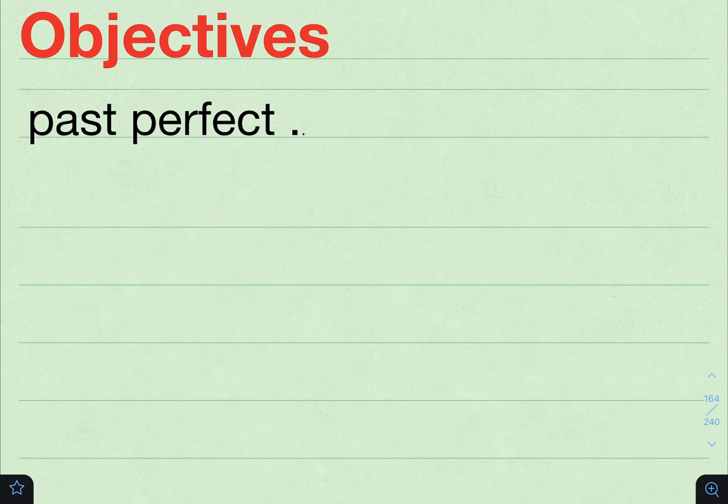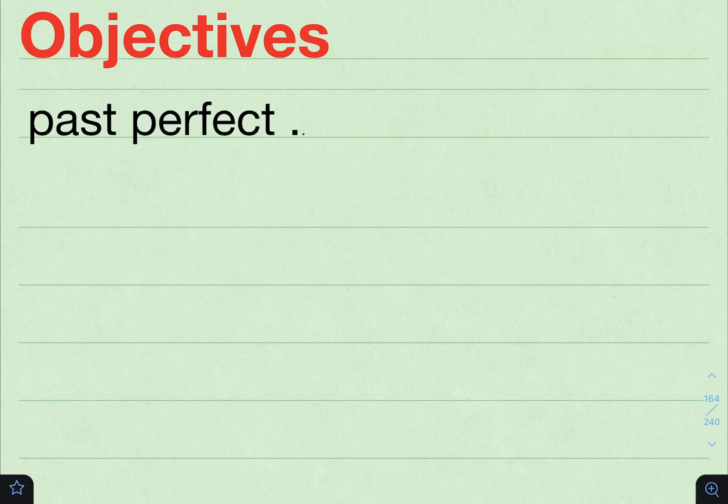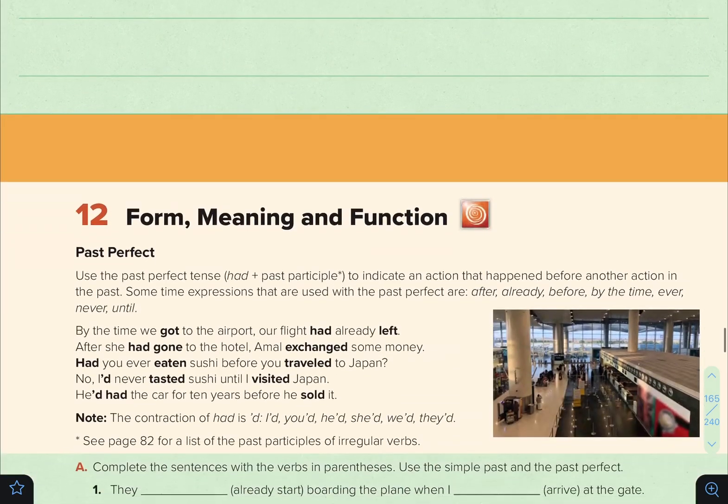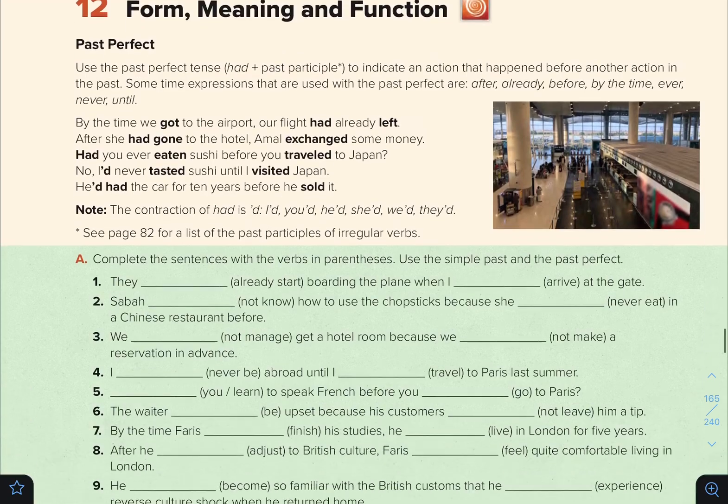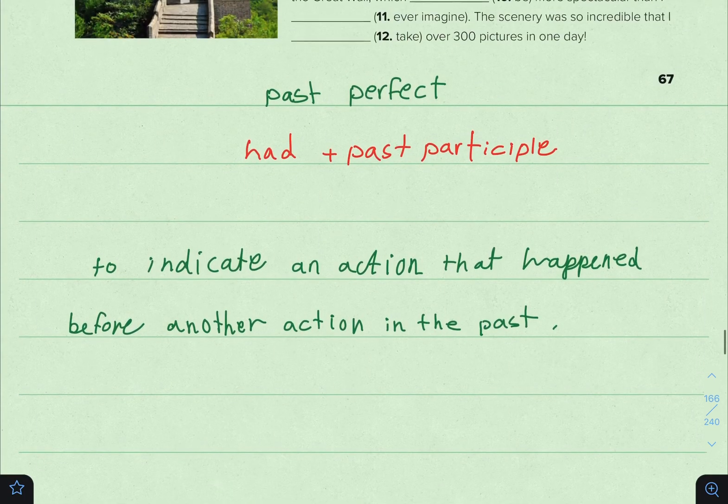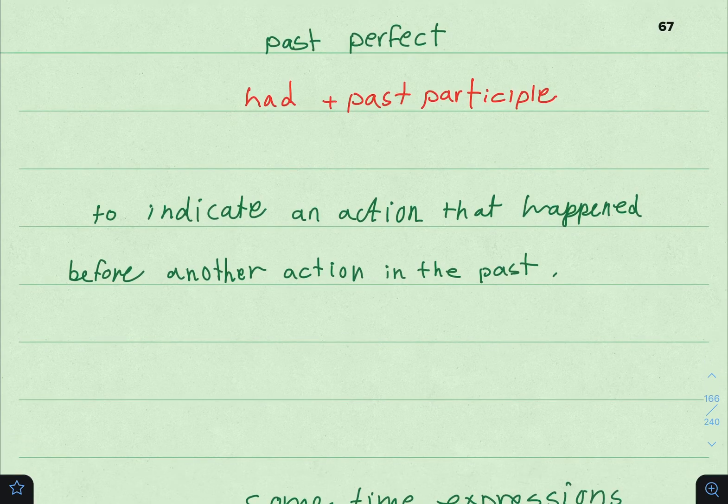The first thing we will be looking at is the objectives. We have one objective in this lesson, which is the Past Perfect - الماضي التام. Please move on to page number 67 and we will be looking at Form, Meaning and Function.